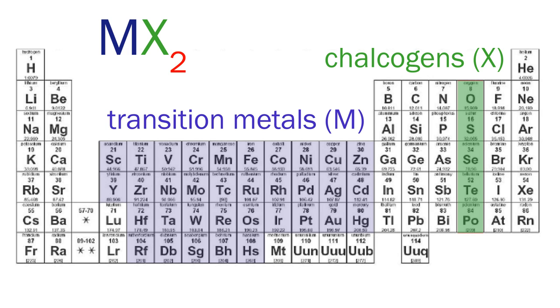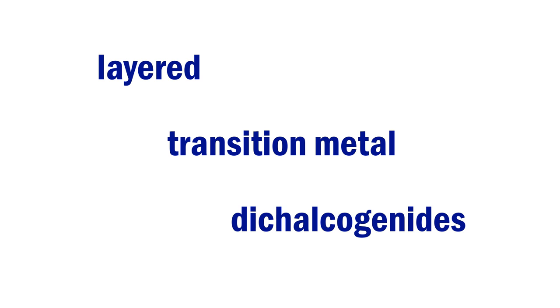However, not all of the elements outlined here form nano-layered materials which we're talking about, so we'll focus on these in particular. These tend to be metal atoms from group 4 through 7, and chalcogen atoms including sulfur, selenium, and tellurium. So there you have it, layered transition metal dichalcogenides.